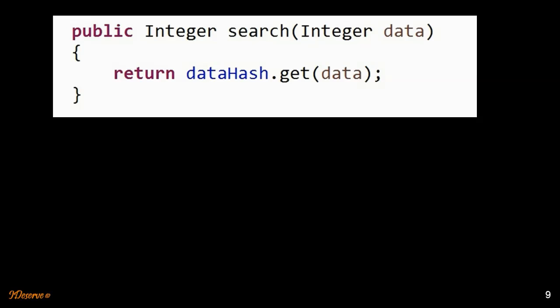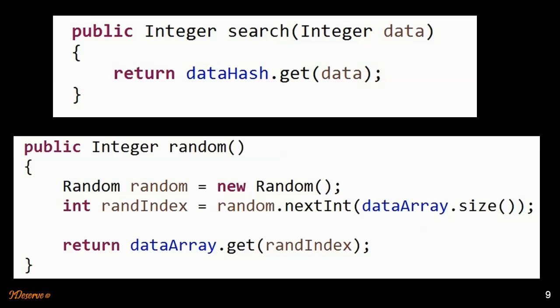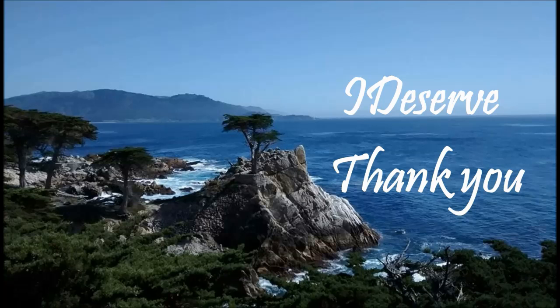To search for data, we simply look it up in the hash table and return the index in the array. To get a random element, we generate a random index and return the data at that index. That's all.